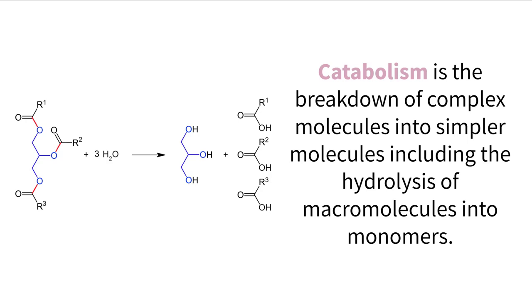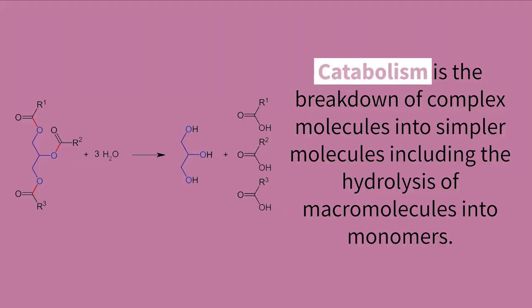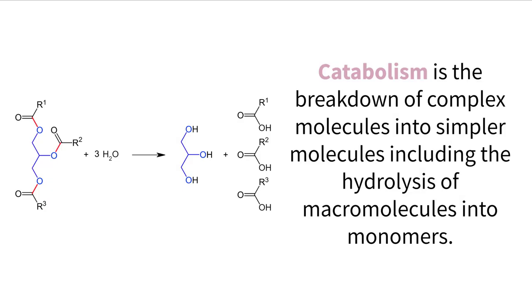We build up macromolecules with anabolism, but we break them down with a different process called catabolism. Catabolism is a process that explains how larger macromolecules are broken apart into their monomer components to be used for a cellular function or to be rebuilt into a different, larger molecule again.